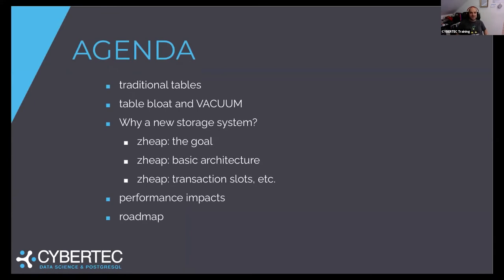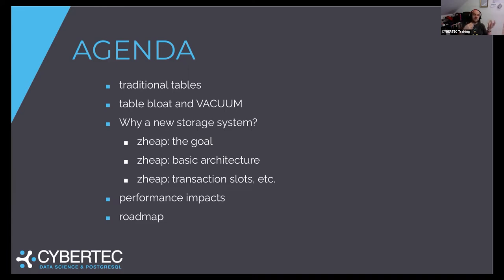So after this quick introduction, let's get started with the agenda. The first thing we need to understand is how a standard Postgres table works. Then we have to wrap our heads around the notion of table bloat and vacuum, and that's naturally going to lead us into Z-Heap, which is going to solve some of those issues. We'll cover the basic architecture, design goals, internals such as transaction slots and TPD, and finally performance and space implications as well as a future outlook.